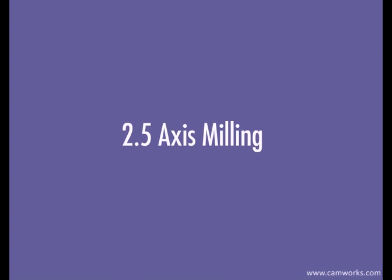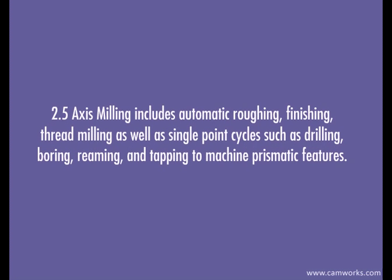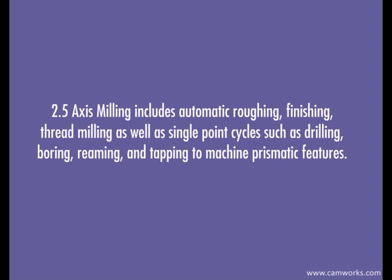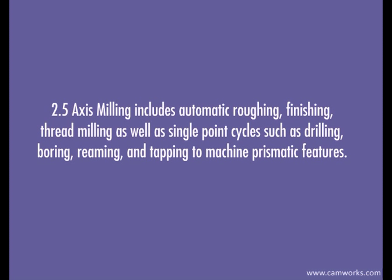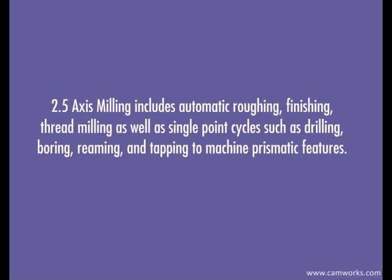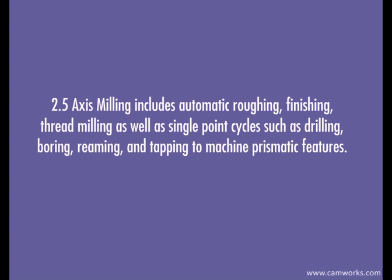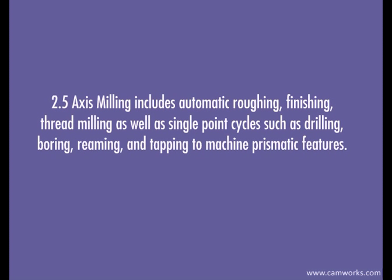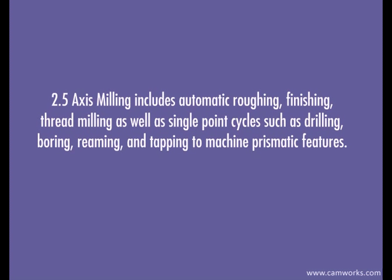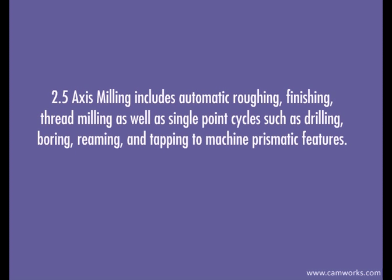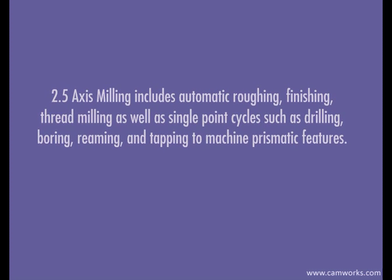Two and a half axis milling includes automatic roughing, finishing, thread milling, as well as single point cycles such as drilling, boring, reaming, and tapping to machine prismatic features.